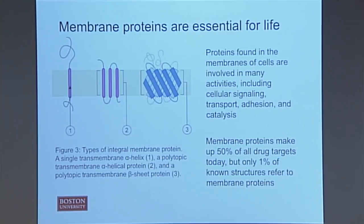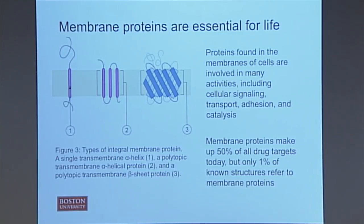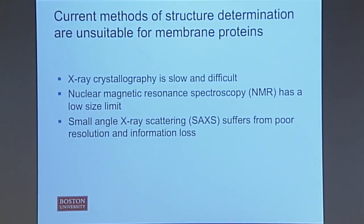Because membrane proteins have all these important functions, they make up approximately 50% of all drug targets today, making them very relevant in the pharmaceutical field. But even though they're that important, only about 1% of known protein structures are of membrane proteins — a very large disparity. The reason is that current methods of structure determination, understanding that three-dimensional folding, are unsuitable for membrane proteins.